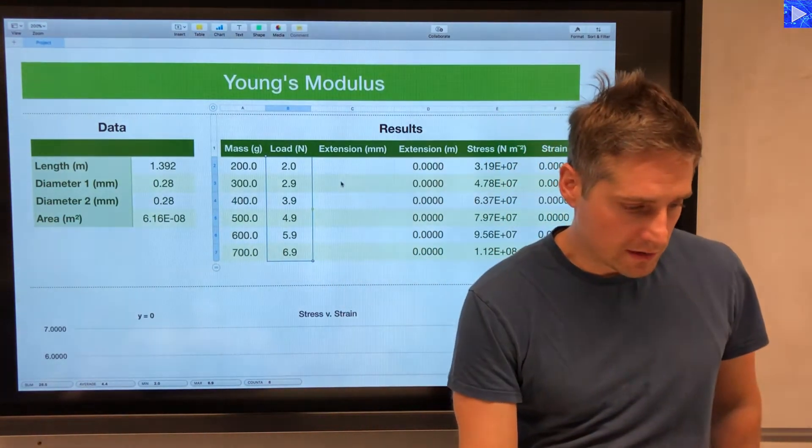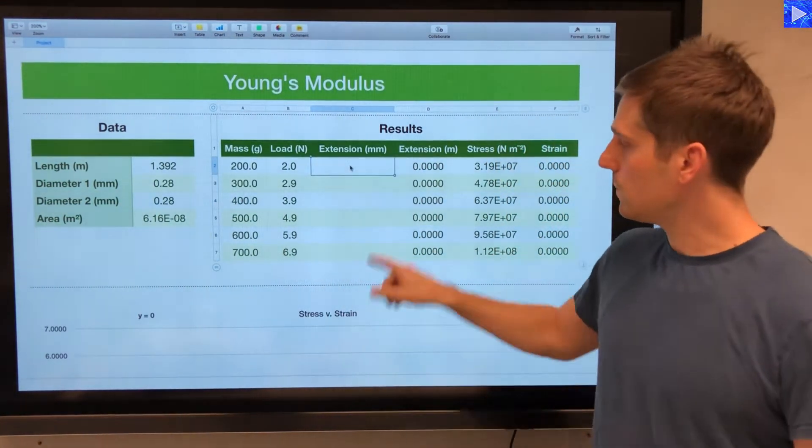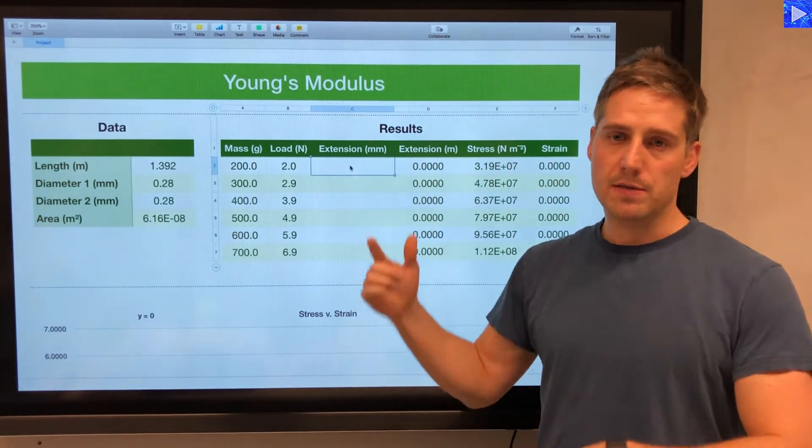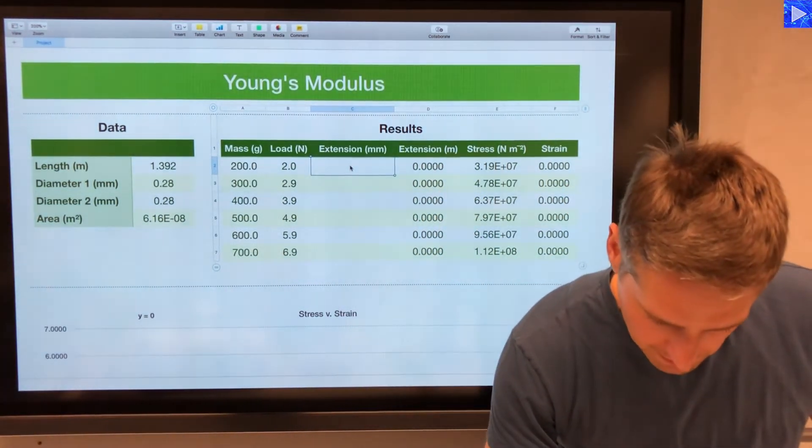My extension values I need to insert in here. I'm inserting them in millimeters, the next column here divided by a thousand to turn them into meters. Let's put those in there first.